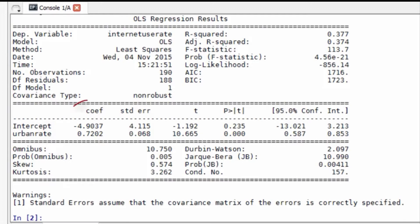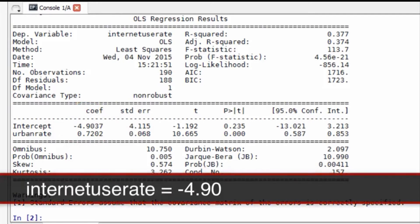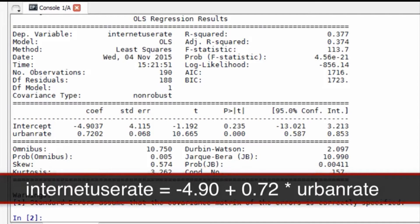Next, let's move to the parameter estimates, which are in the COEF column. Here we have the estimates, also known as coefficients or beta weights, for both our intercept and for the variable urban rate. Thus the coefficient for urban rate is 0.72 and the intercept is negative 4.90. So now we know that our equation for the best fit line of this graph is internet use rate equals minus 4.90 plus 0.72 times urban rate.